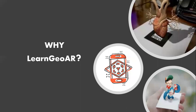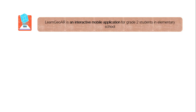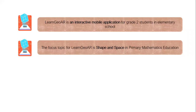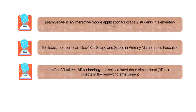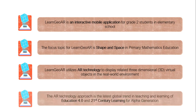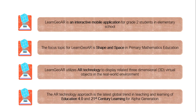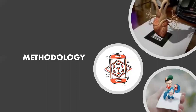Now, why do we need to develop LearnGeoAR? LearnGeoAR is an abbreviation for 'Learning Geometry using Augmented Reality.' This application is an interactive mobile application for grade two students in elementary school. The focus topic for LearnGeoAR is shape and space in primary mathematics education, which falls under the topic of geometry. LearnGeoAR utilizes AR technology to display related three-dimensional visual objects in a real-world environment. The AR technology approach is the latest global trend in teaching and learning for Education 4.0 and also 21st century learning for the alpha generation.